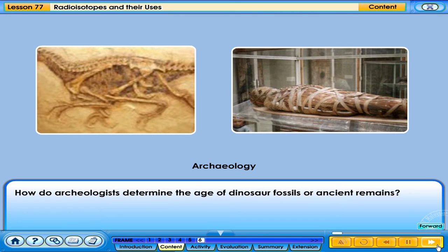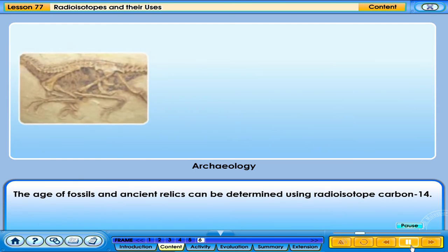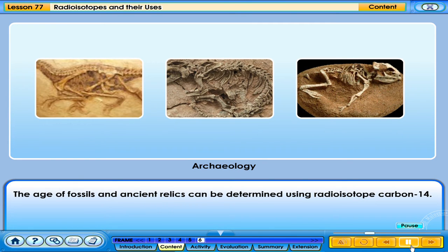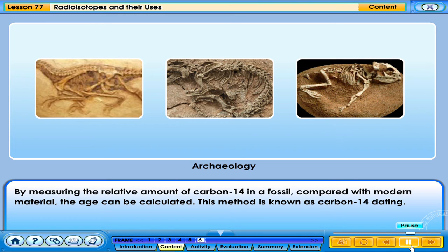How do archaeologists determine the age of dinosaur fossils or ancient remains? The age of fossils and ancient relics can be determined using the radioisotope carbon-14. When living organisms die, the amount of carbon-14 decreases. By measuring the relative amount of carbon-14 in a fossil compared with modern material, the age can be calculated. This method is known as carbon-14 dating.